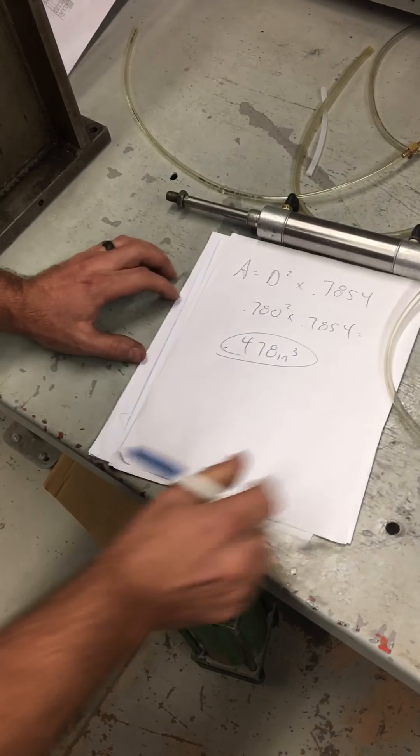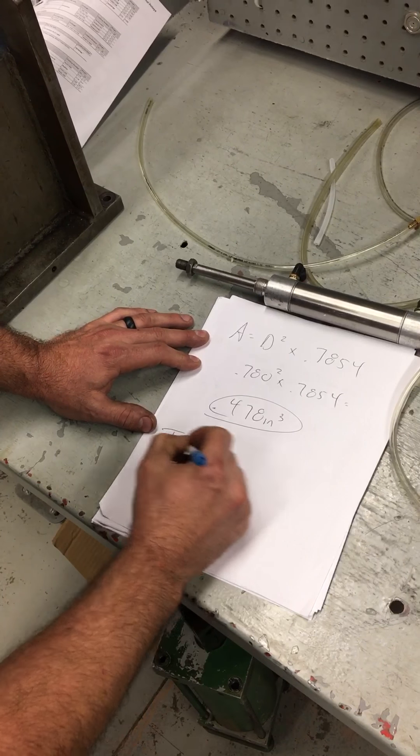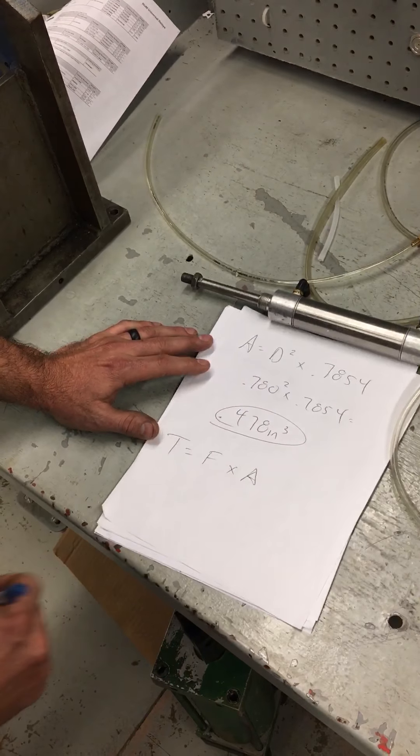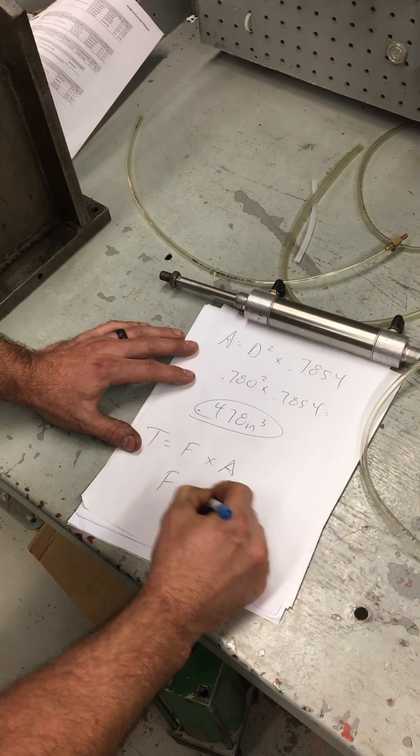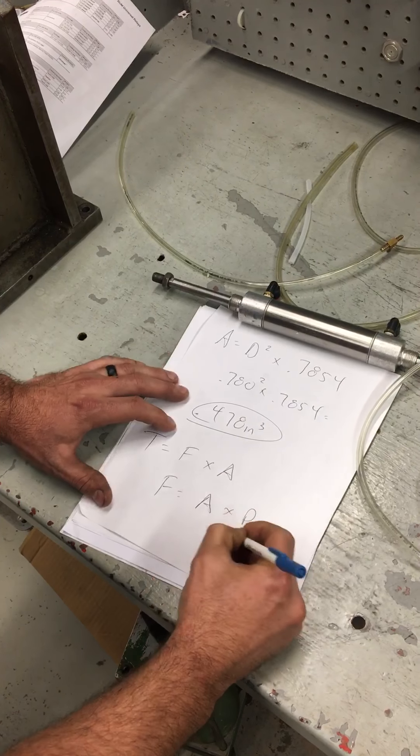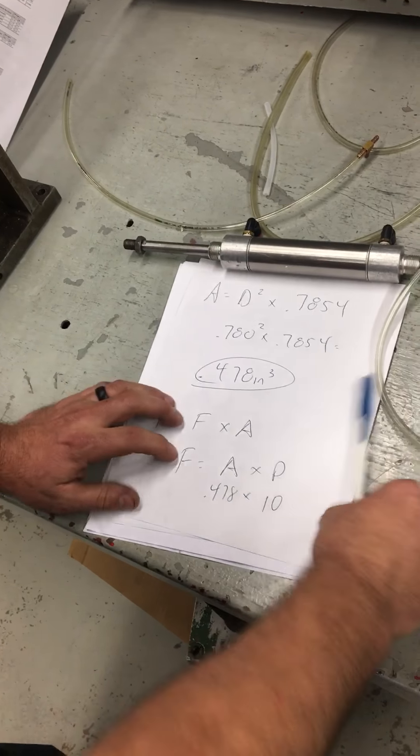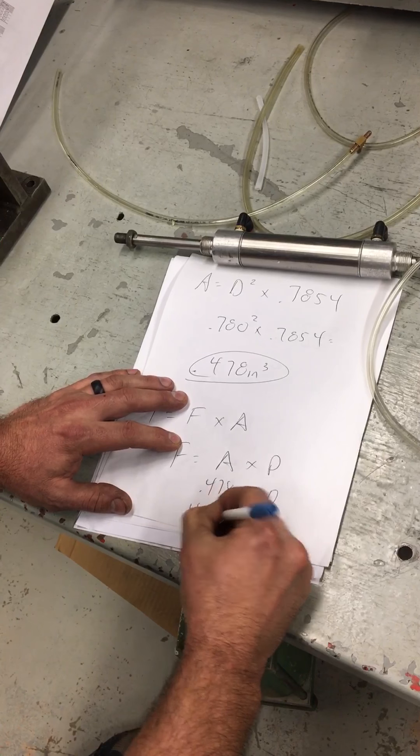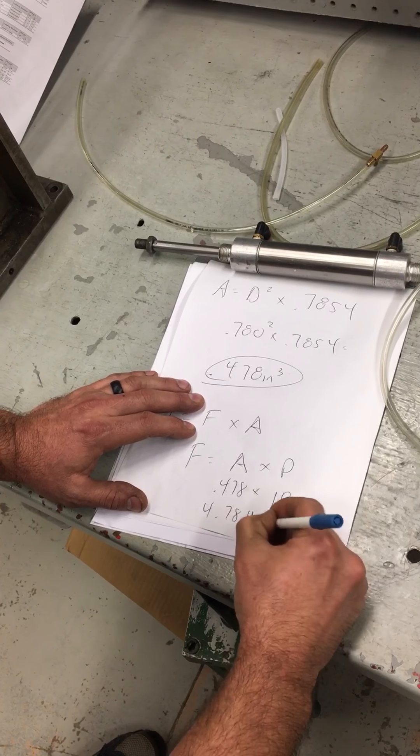Now in order for us to come up with torque, torque equals force times area. But in order to figure out what force is, force is area times pressure. So pressure is at 10 psi and our area is 4.78. Okay, so put that together we'll get an answer of 4.78 pounds of force.